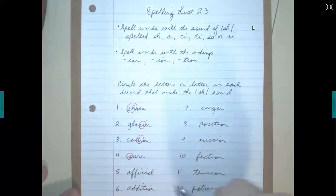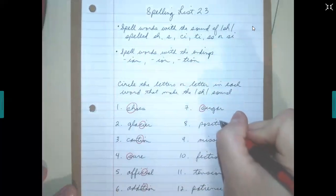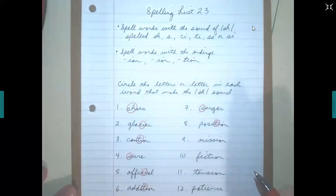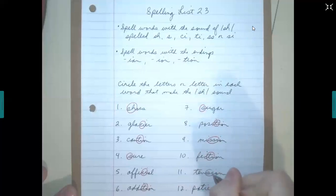Number six, addition, T-I. Number seven, we have sugar, just the S. Eight is position, the T-I. Number nine, mission, that's S-S, S-I. Ten is fiction, circle the T-I. And eleven, tension, the S-I. And twelve, patience, T-I.